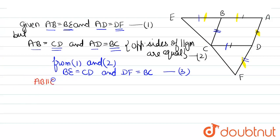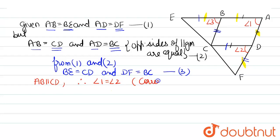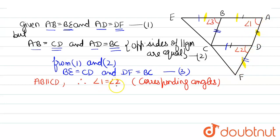AB is parallel to CD. Mark angle 1, angle 2, and angle 3 on the diagram. Since AB is parallel to CD, angle 1 equals angle 2 — they are corresponding angles, and corresponding angles between parallel lines with transversal AF are equal.